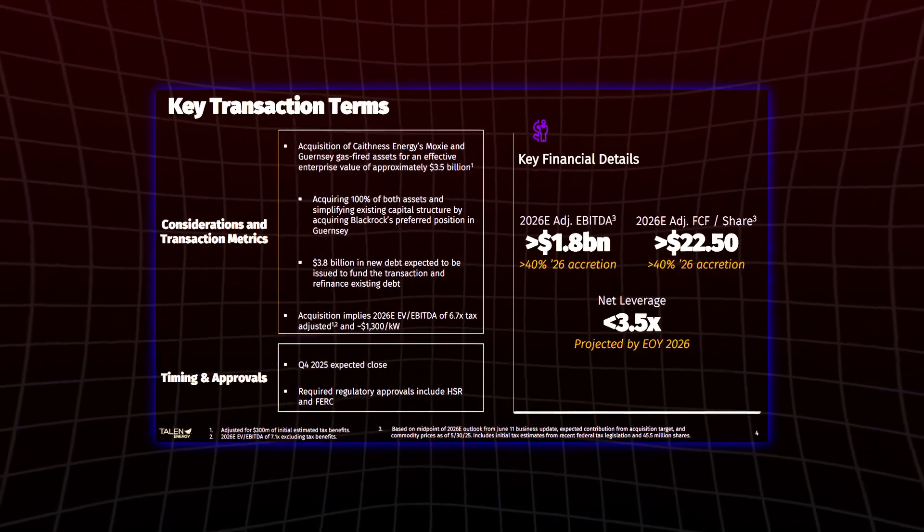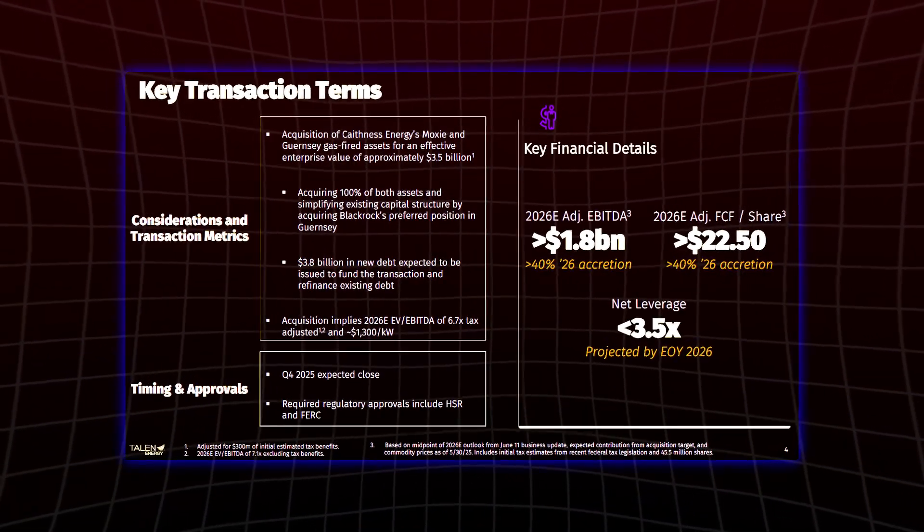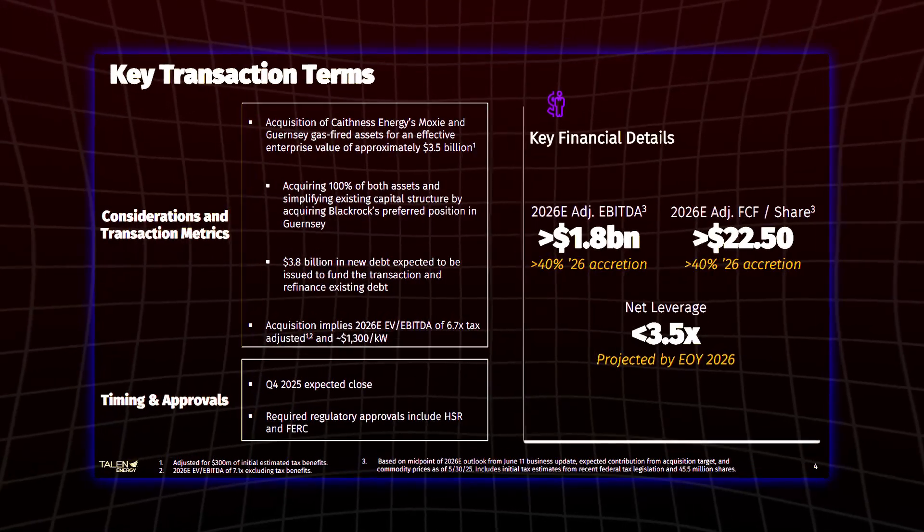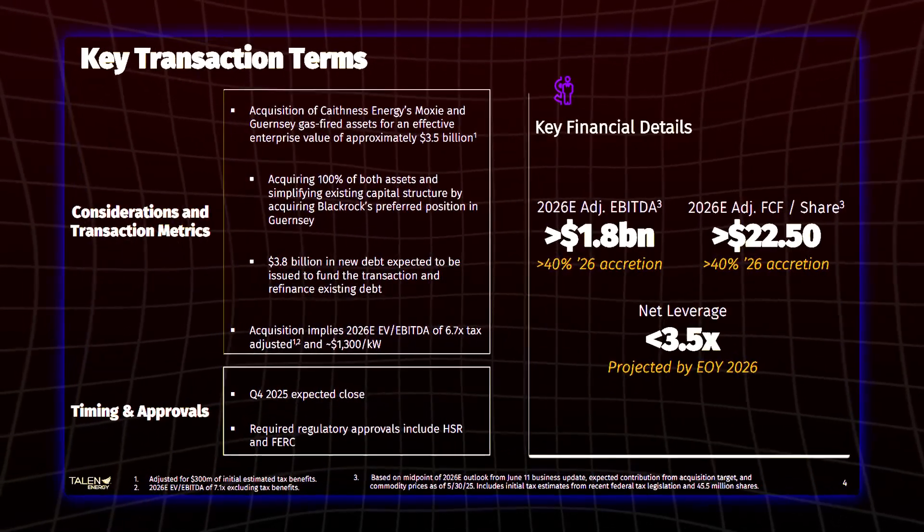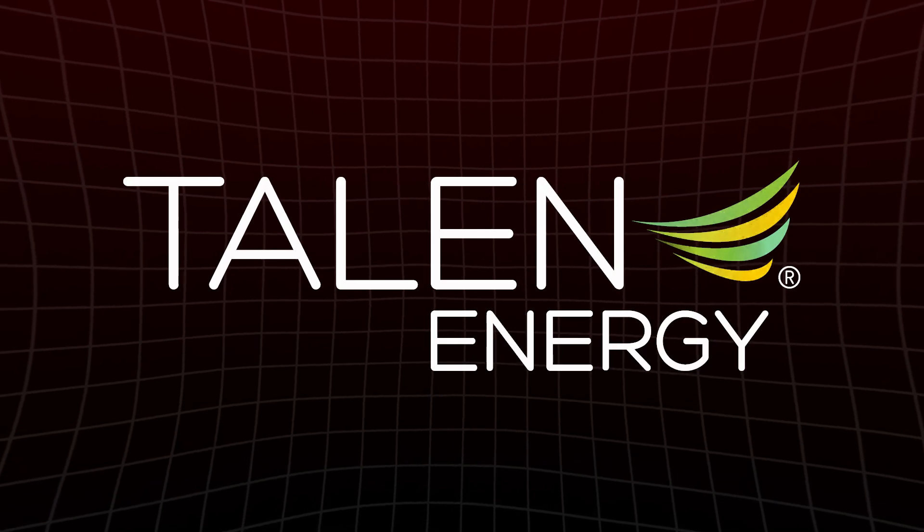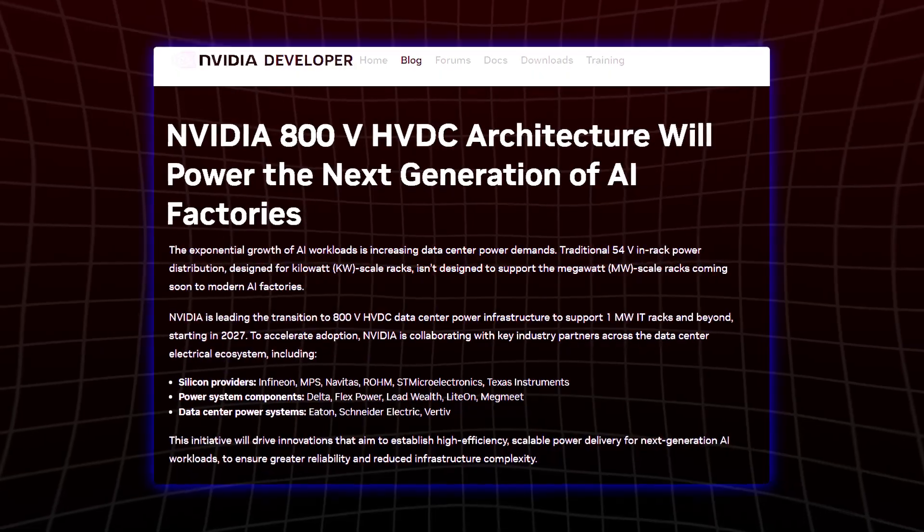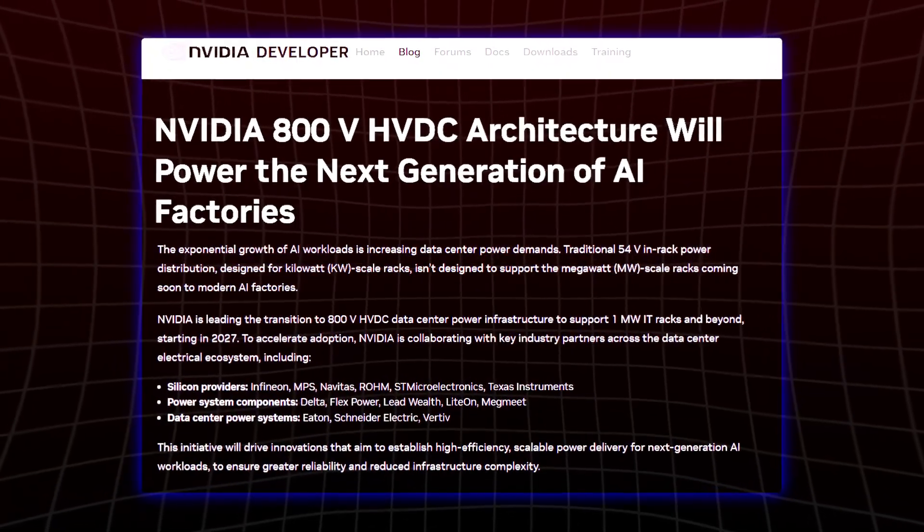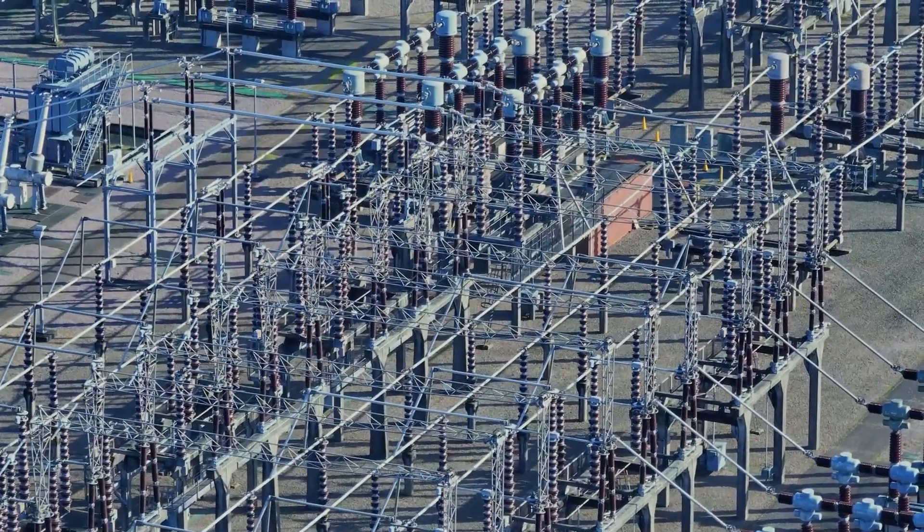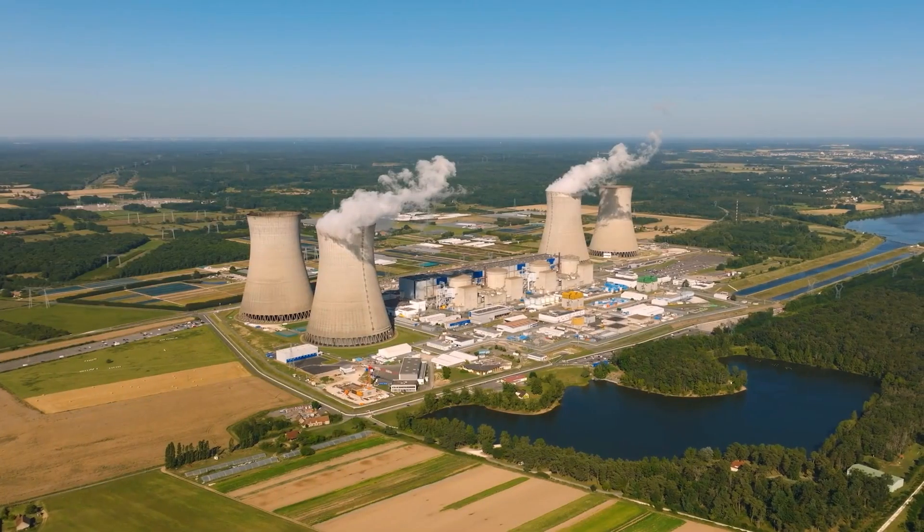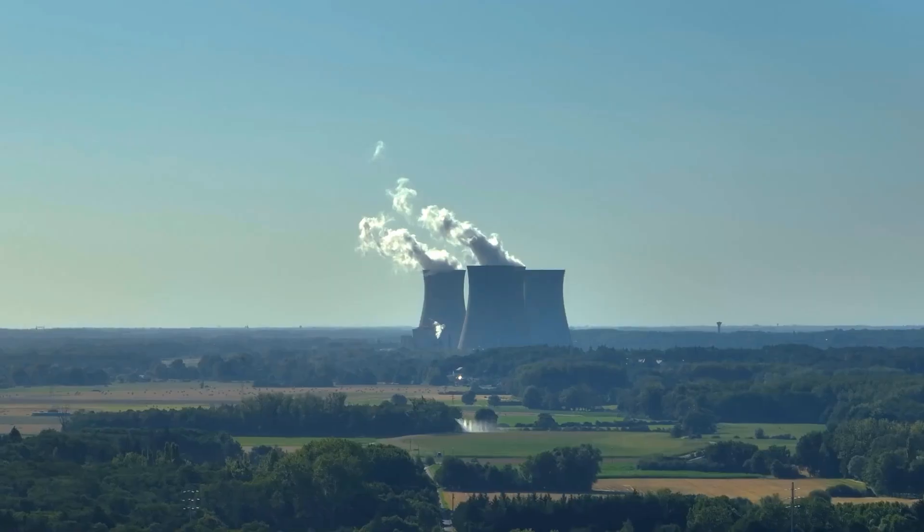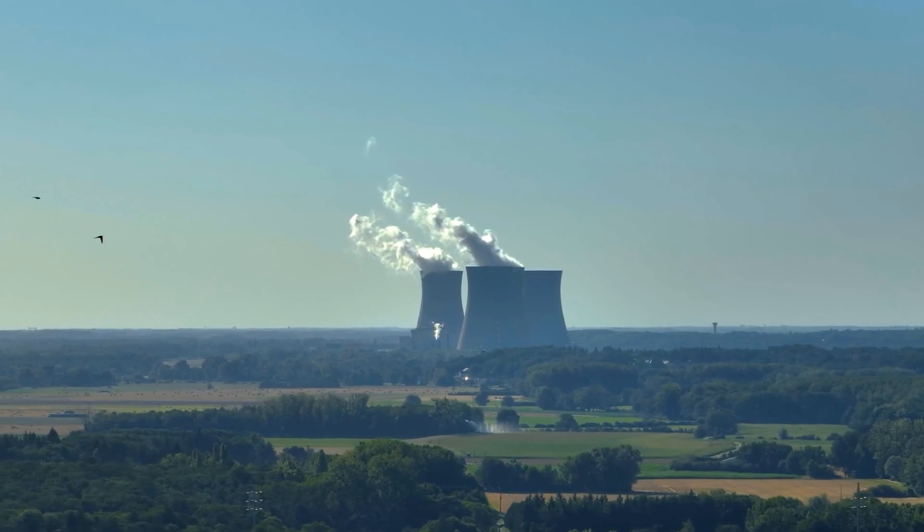That deal alone adds nearly half a billion dollars in long-term EBITDA potential, proving that top-tier clients are locking in capacity with Talon now. What makes Talon especially compelling is its timing. With NVIDIA's Rubin Ultra GPUs set to 5x power needs by 2027, and the U.S. grid under massive pressure, companies like Talon are no longer just energy providers — they're the backbone of the AI revolution.